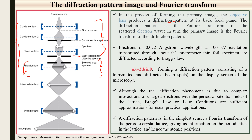Electrons of 0.072 Ångström wavelength at 100 kV, transmitted through about 0.1 micrometer thin foil specimen, are diffracted according to Bragg's law: nλ = 2d sinθ. This forms a diffraction pattern consisting of transmitted and diffracted beam spots on the display screen of the microscope. Although the real diffraction phenomenon involves complex interaction of charged electrons with the periodical potential field of the lattice, Bragg's law is a sufficient approximation for practical applications. A diffraction pattern is in its simplest sense a Fourier transform of the periodic crystal lattice, giving information about periodicities and atomic positions.